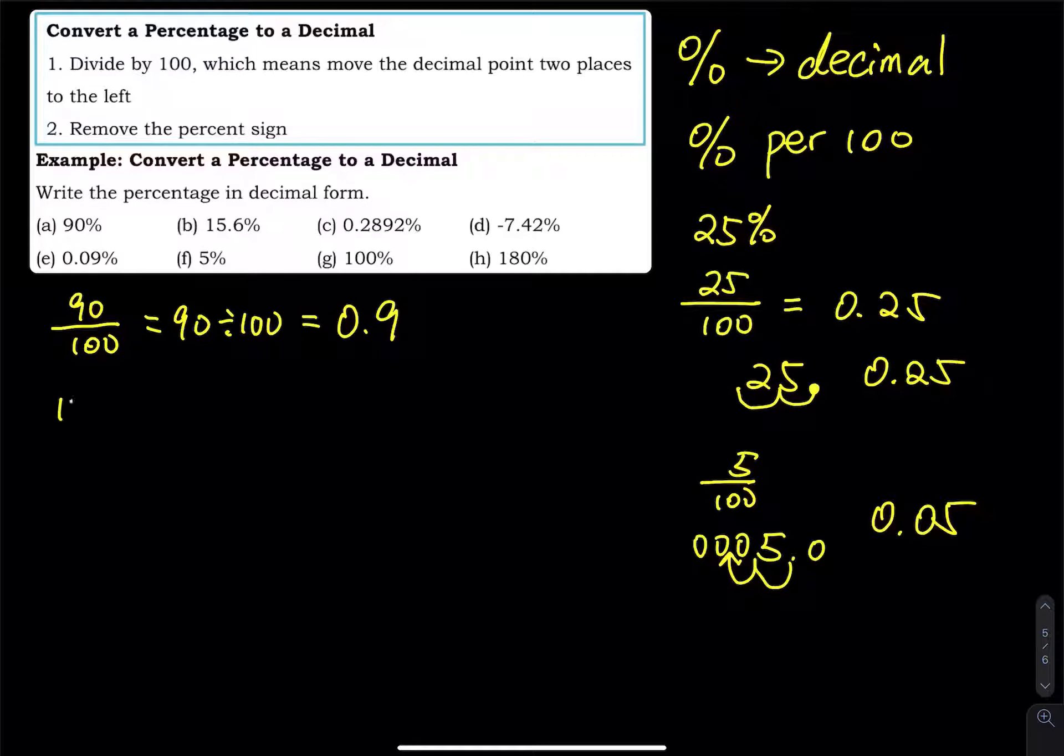And then the second one is 15.6 percent. So that is 15.6 divided by 100. Or you write 15.6 divided by 100. That equals 0.156.